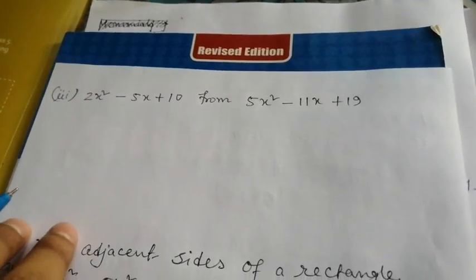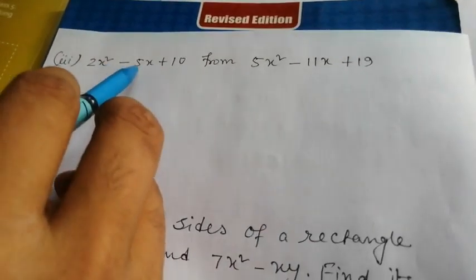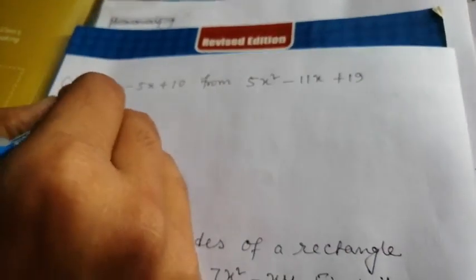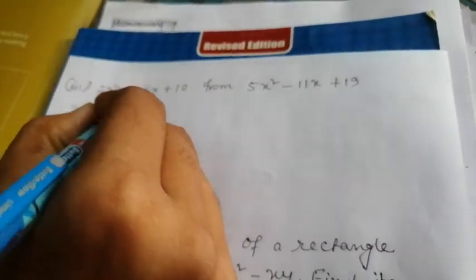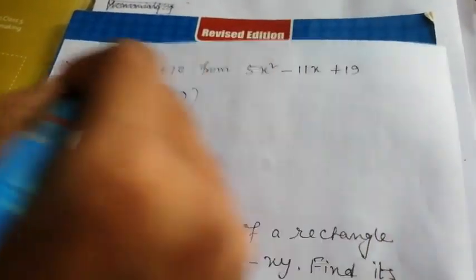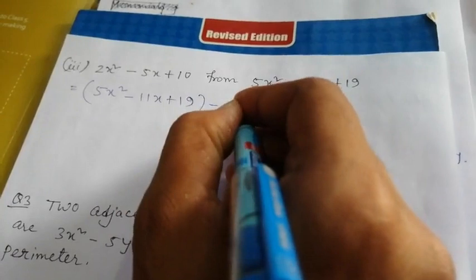Now the next question, question number three, part two: subtract 2x² - 5x + 10 from 5x² - 11x + 19. So obviously we have to write down first of all 5x² - 11x + 19. Always use brackets when subtraction is there.